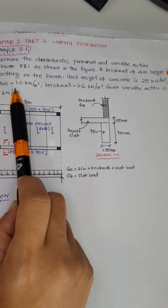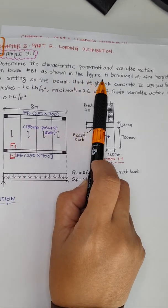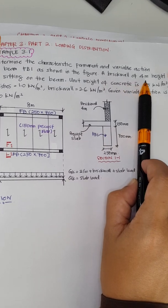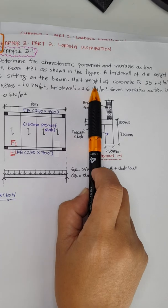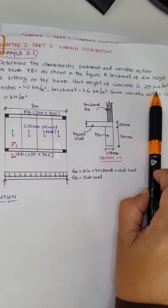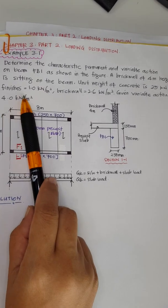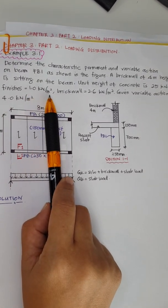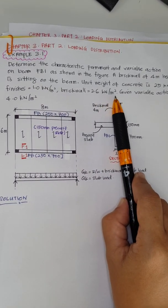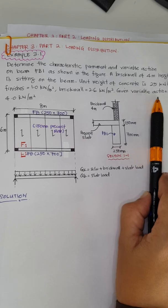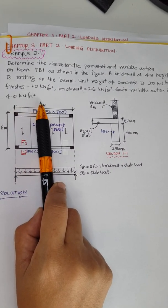On beam FB1, as shown in the figure, a brick wall of 4 meter height is sitting on the beam. The unit weight of concrete is 25 kilonewton per meter cube. Finishes: 1.0 kilonewton per meter square. Brick wall: 2.6 kilonewton per meter square. The given variable action is 4.0 kilonewton per meter square.